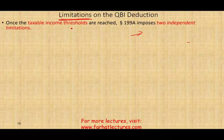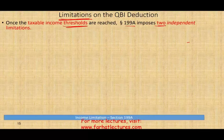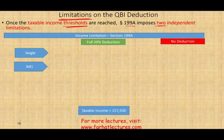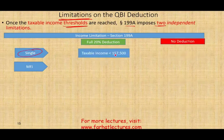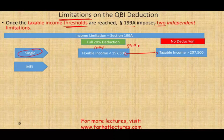Once taxable income reaches a certain threshold, Section 199 imposes two independent limitations. We're going to work with each limitation separately. If you are single and your taxable income is below $157,500, you're going to get 100% of the 20% deduction — 20% of the lower of your qualified business income or modified taxable income. However, between $157,500 and $207,500, which is a $50,000 range, your deduction will start to decrease.